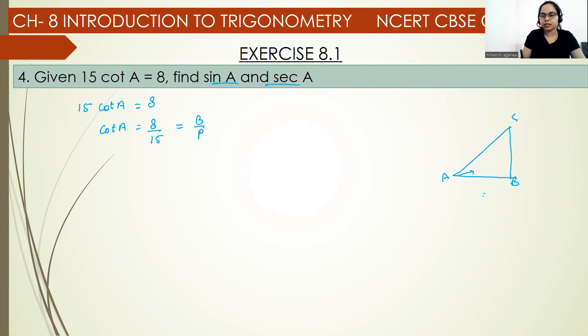We can add 8k here and 15k there. We need to add a variable because there is no absolute answer to this. By using Pythagoras theorem, what can we do? We can find the hypotenuse value.